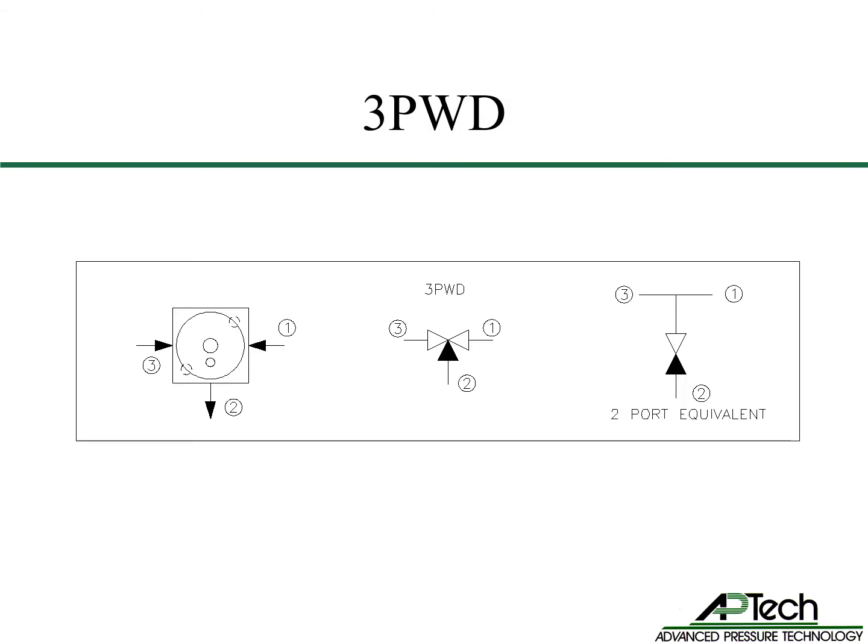The 3PWD port configuration is shown here in three different images: plan view, three-port schematic view, and two-port valve with an equivalent schematic view. 3PWD is one of the optional three-port valve configurations. Note how the 3PWD porting eliminates a plumbing tee. Three- and four-port valve configurations can be used to eliminate plumbing tees and elbows.